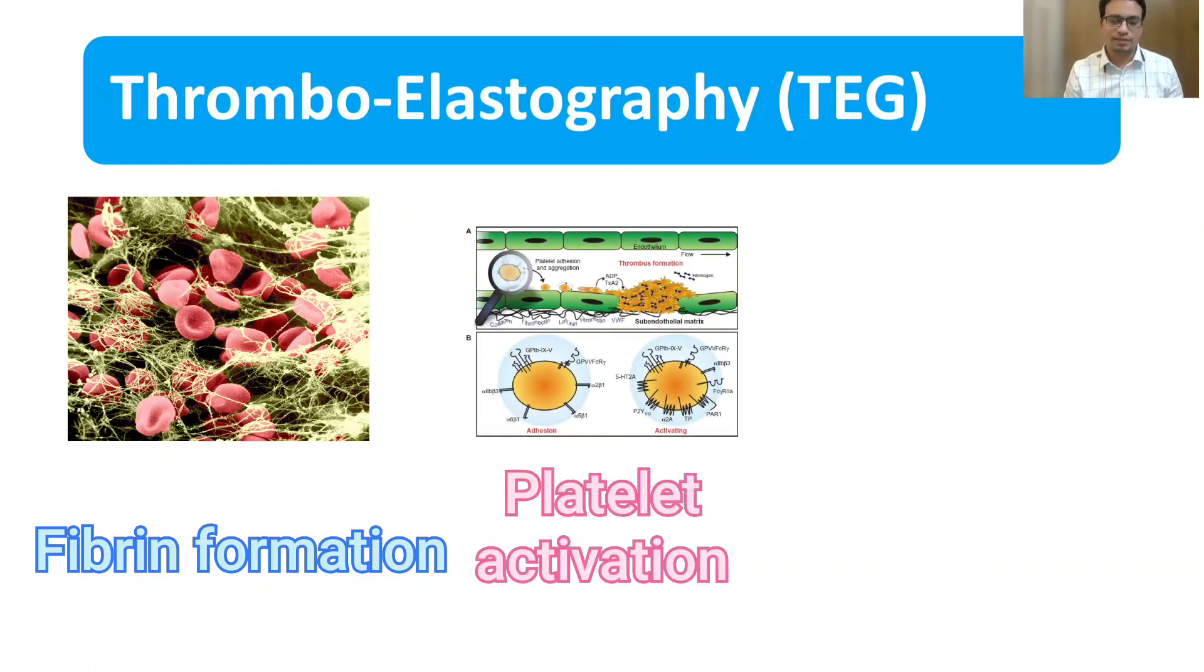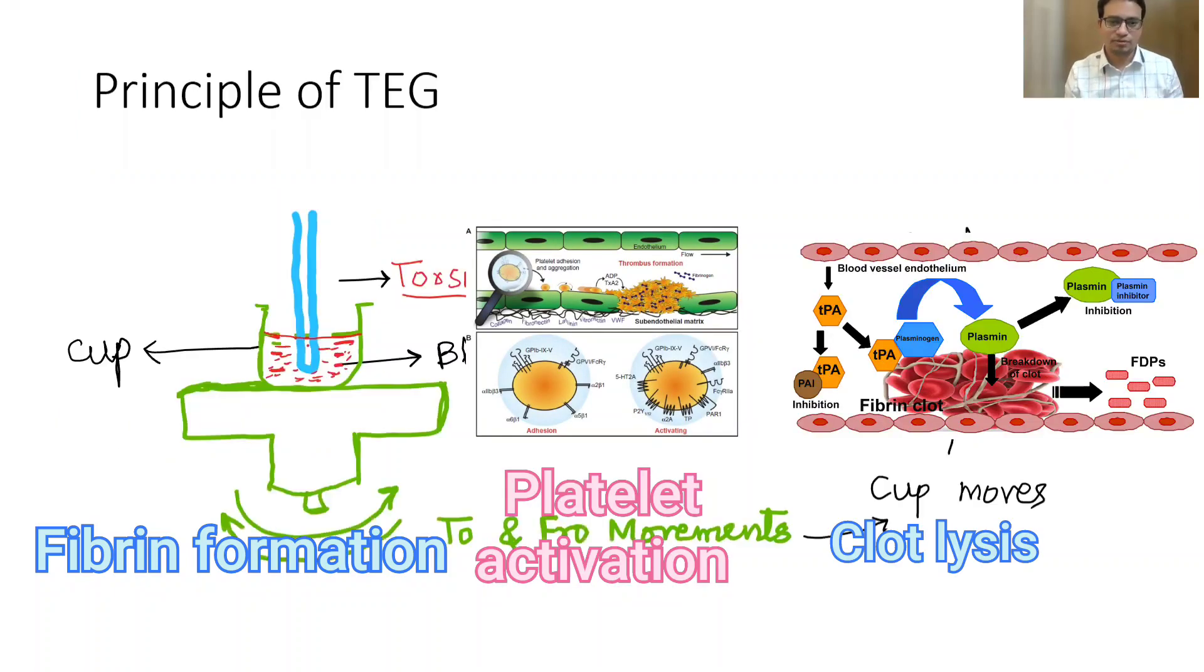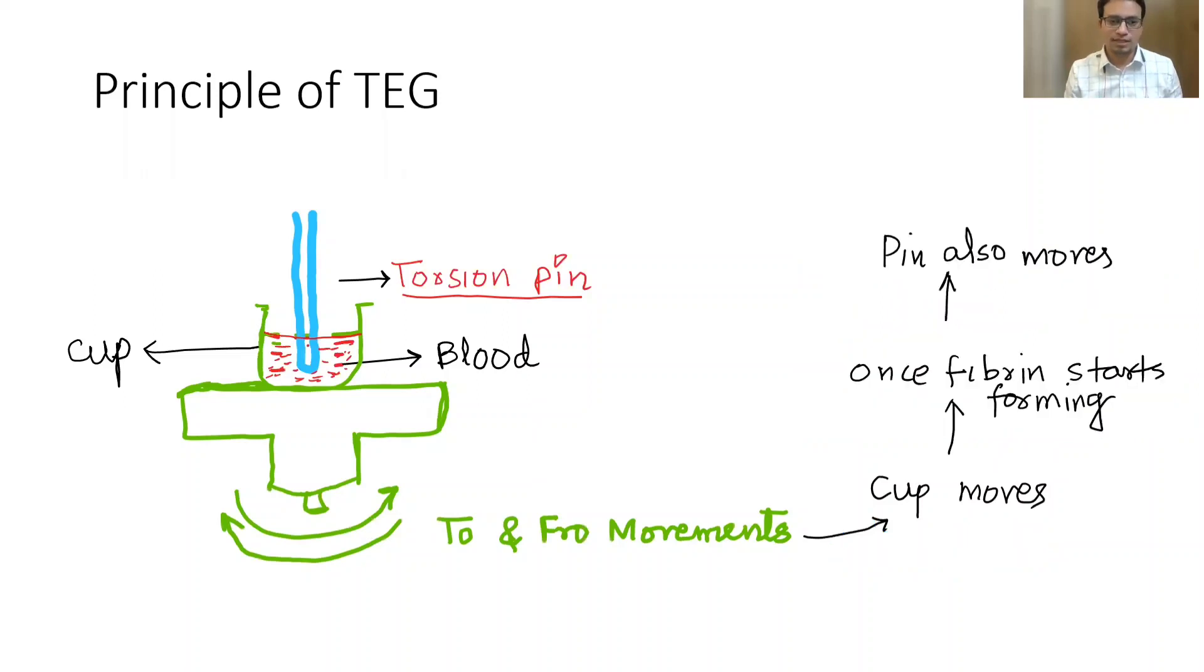Understand here the principle of TEG. It is like this: the whole blood from the patient is added to the activator and then the whole blood is placed in a cup. Then a pin, called the torsion pin, is immersed into the blood.